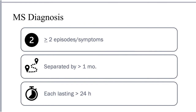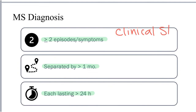There are three primary criteria that must be met in order for a diagnosis of MS to be made. The first is that there have to be at least two episodes or symptoms that have occurred. These episodes have to be separated in time by at least one month, and each episode has to last at least 24 hours. Episodes can be identified clinically by signs and symptoms, or they may be identified using imaging technology to identify lesions in the brain.